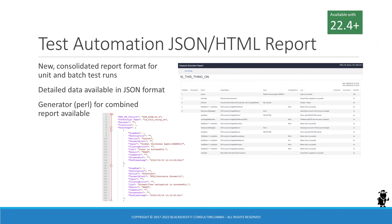Siebel Test Automation is another area with a rich history. Even early versions of Siebel CRM supported the automation of functional and load tests, albeit dependent on third-party products. With IP17, Oracle introduced several enhancements to the test automation module, including in-application recording and playback of test scripts, as well as batch or lights-out testing via a Jenkins plugin.